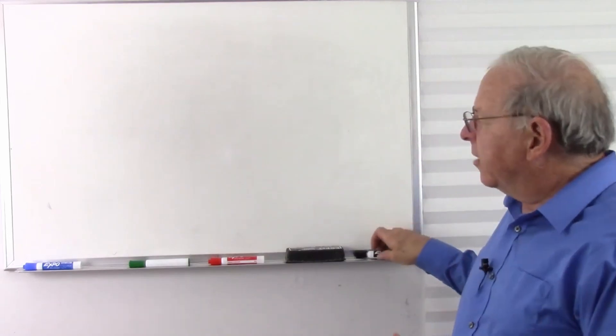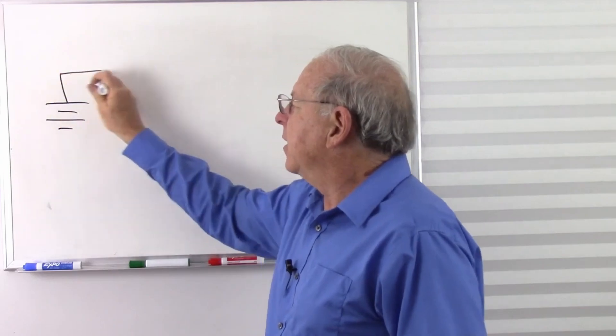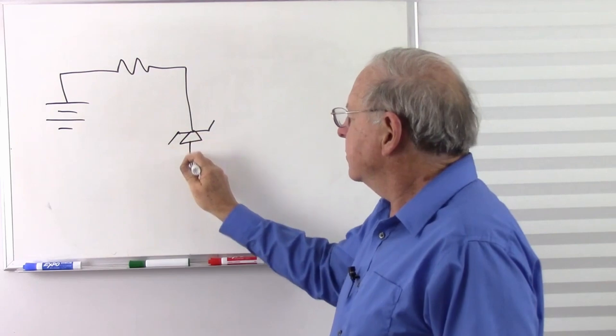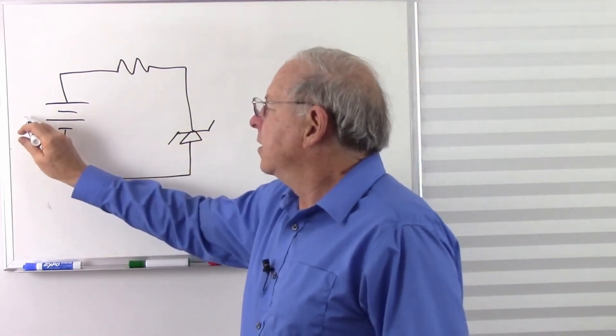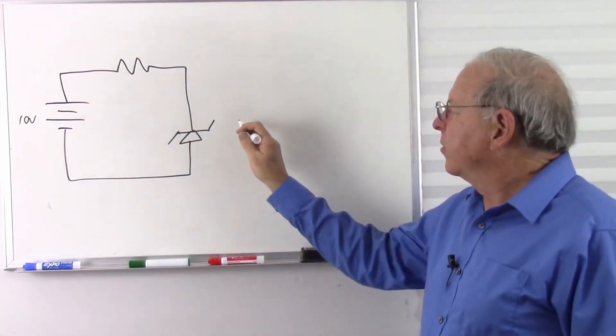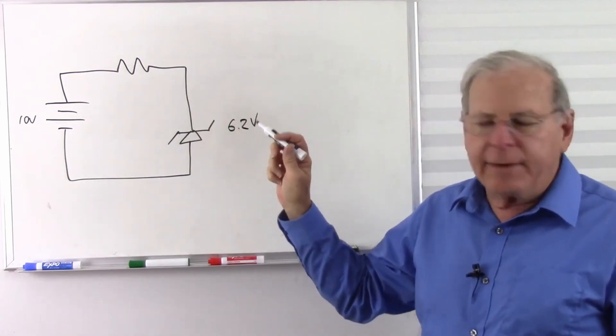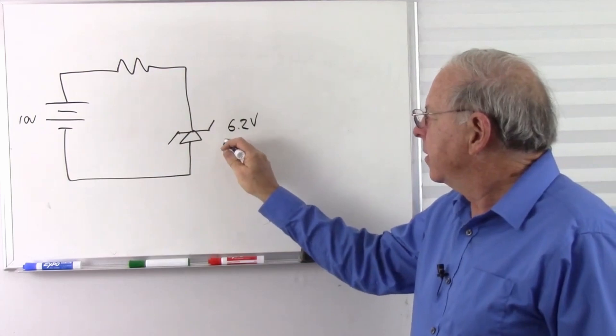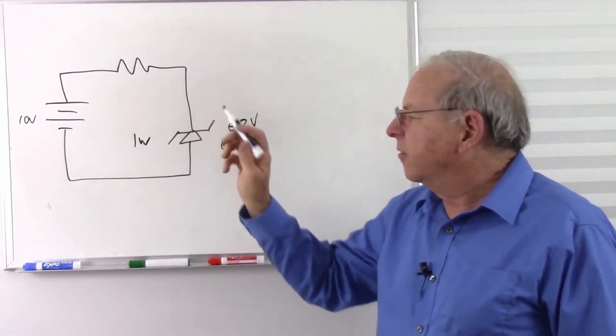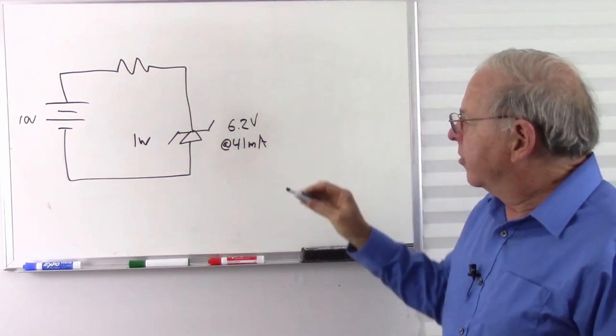Let me just quickly remind you of how a Zener diode works. We have a battery here and a current limiting resistor and a Zener diode. We'll make this a 10-volt battery. Let's say this is a 1N4735, so that's going to be a 6.2-volt Zener diode at 41 milliamps. That's also going to be a 1-watt diode. This is the test current of 41 milliamps at 6.2 volts.